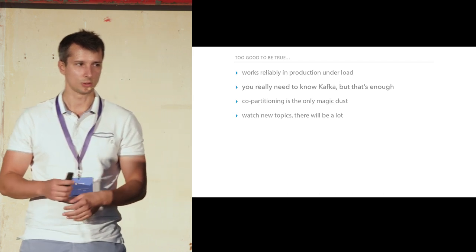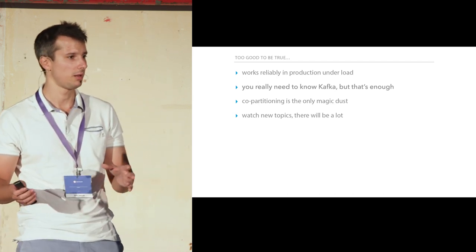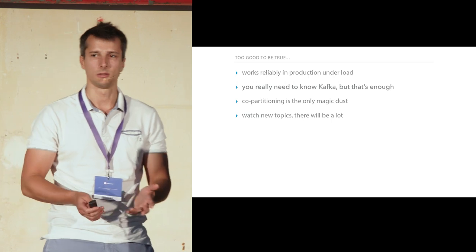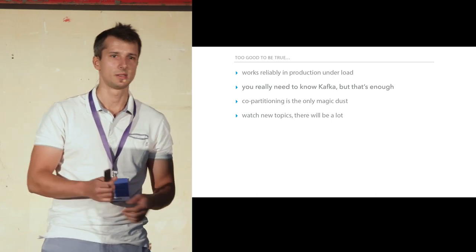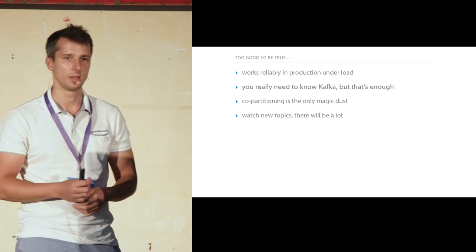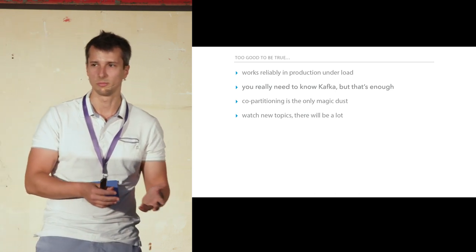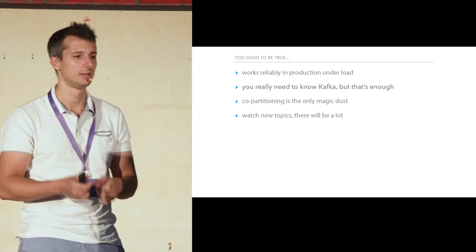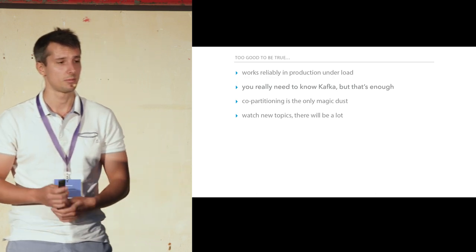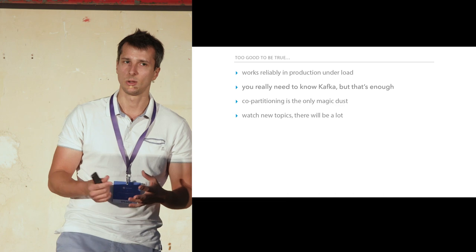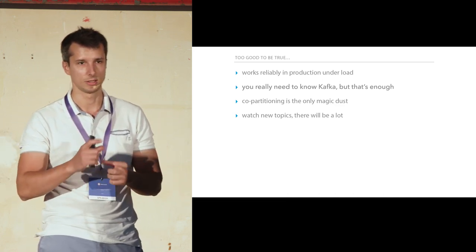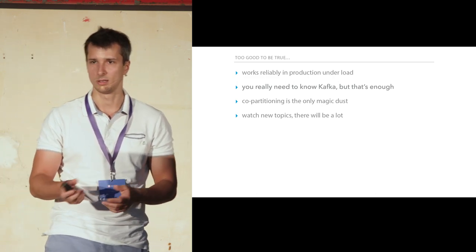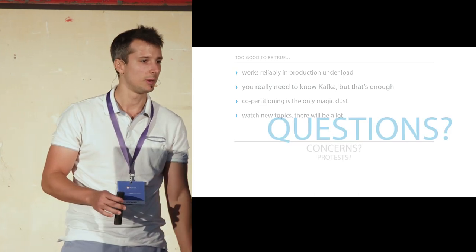I appreciate that co-partitioning is the only magic dust — I've been traumatized by Ruby on Rails and I hate magic. The only caveat is that there are going to be a lot of Kafka topics. You have to be very honest about this with your operational team — you'll likely duplicate or triplicate your data just because Kafka Streams creates topics for you. Watch closely, because sometimes just thinking your topology through a little bit more can significantly reduce the number of topics being created.